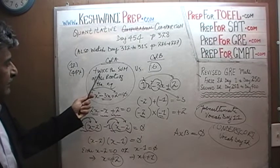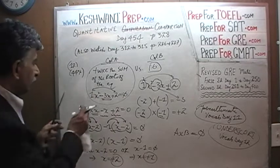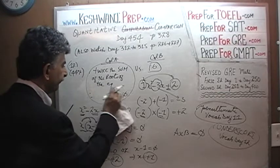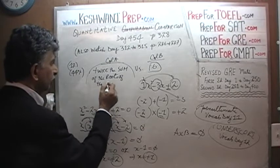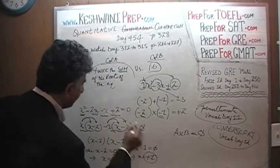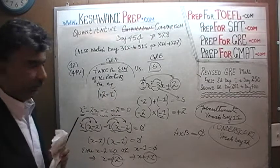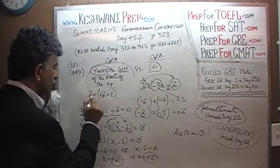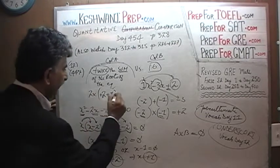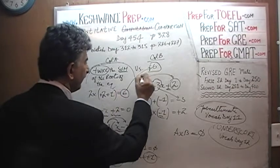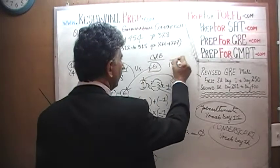We are asked to compare twice the sum of the roots. The roots are positive 2 and positive 1. The sum is 2 plus 1 equals 3, and twice that is 2 times 3 equals 6. That is exactly what we have in column B, and therefore the answer is C.